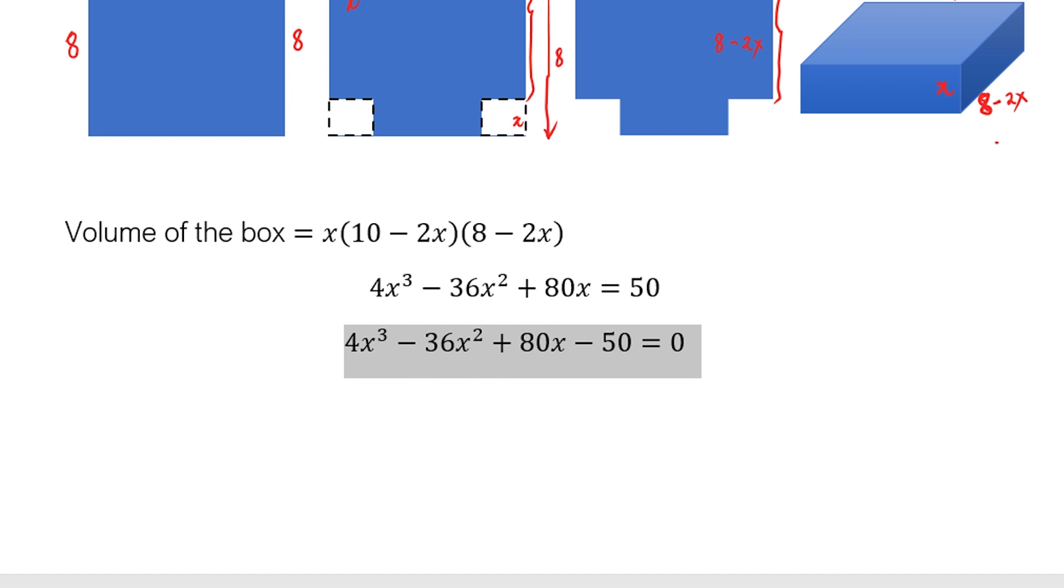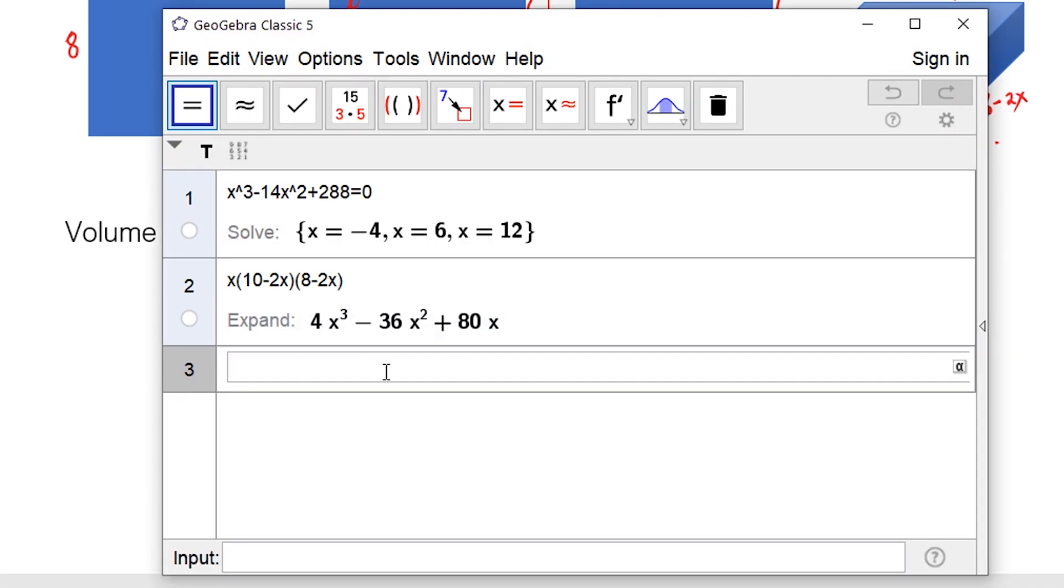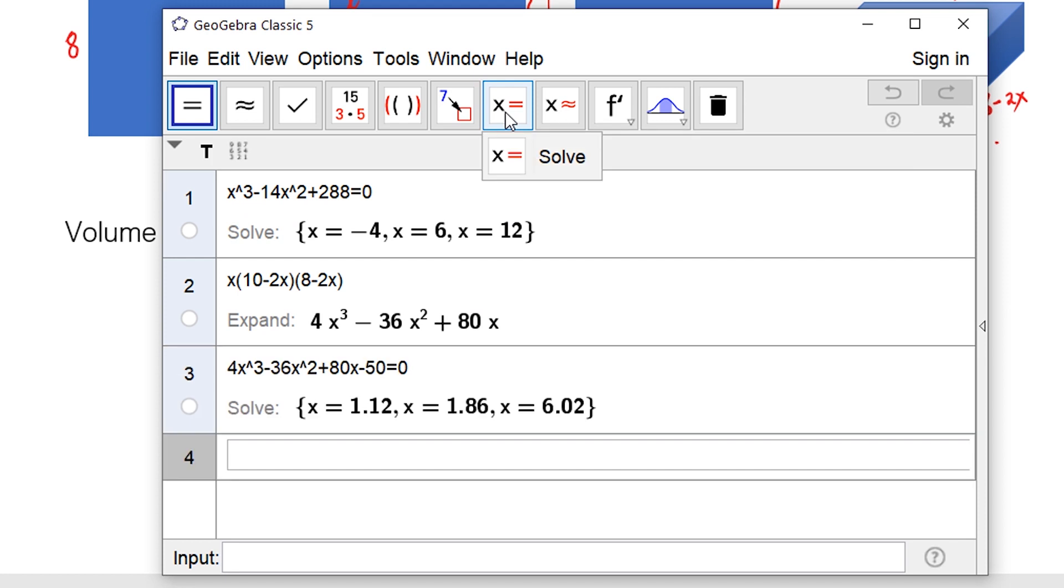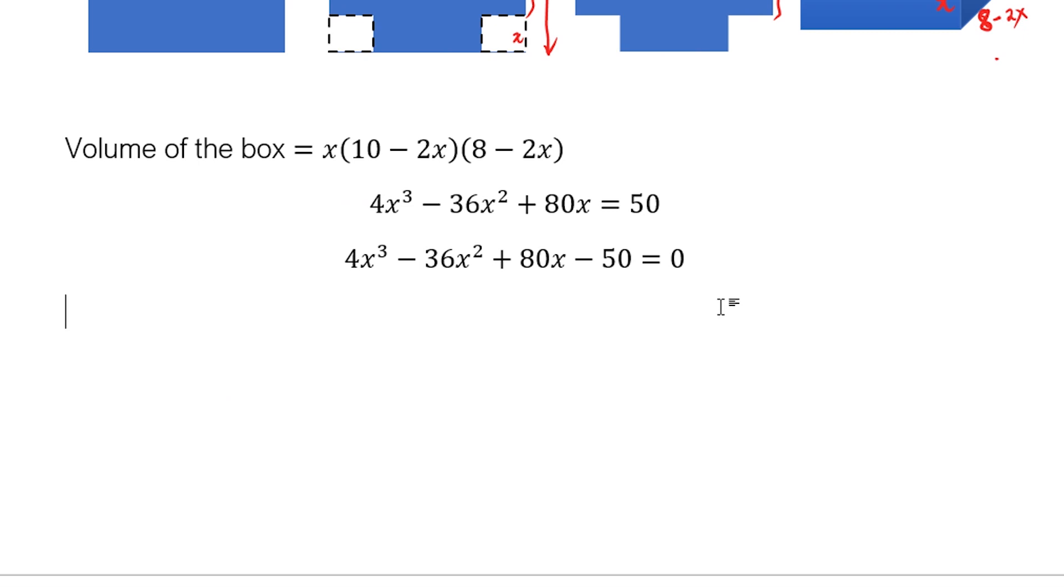And for this case, let's use GeoGebra again. Paste it there. And then let's click here: solve. So we have 3 values of x. We have x equals 1.12, x equals 1.86, and x equals 6.02. Let's copy this.